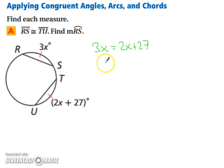We're not done yet. We still have to plug it back in. And 27 times 3 will give us 81 degrees.